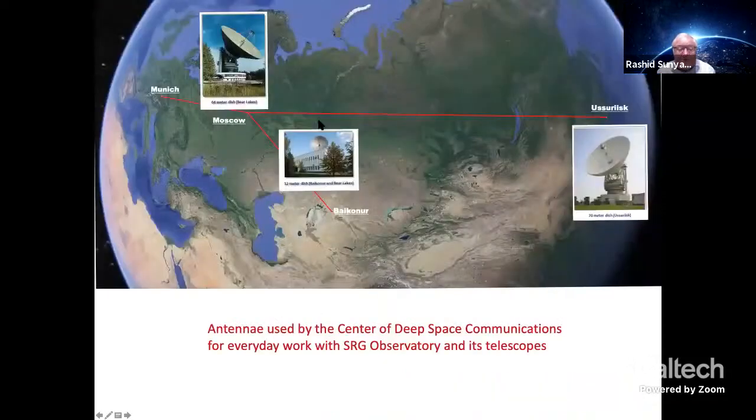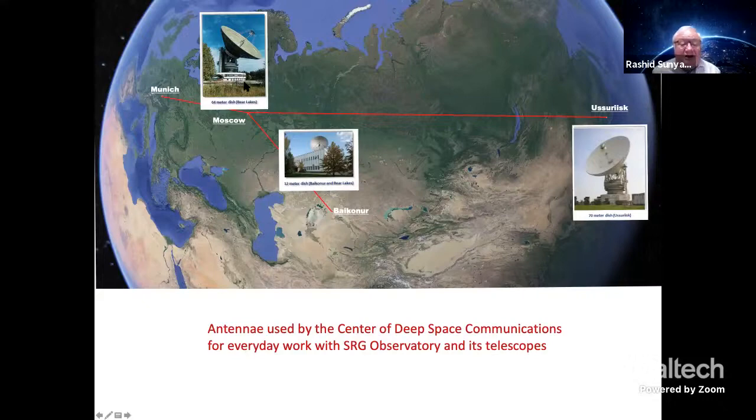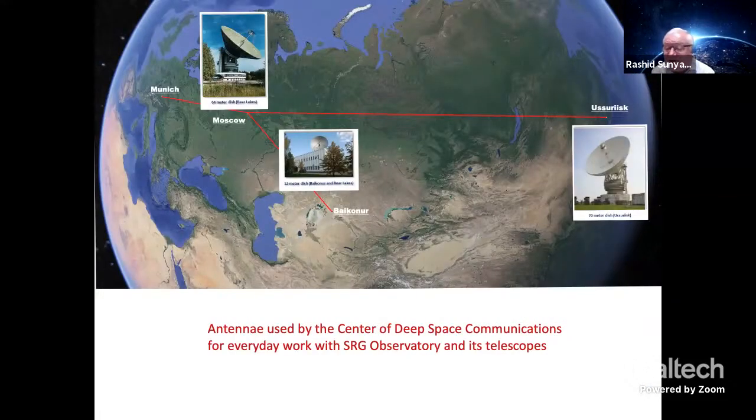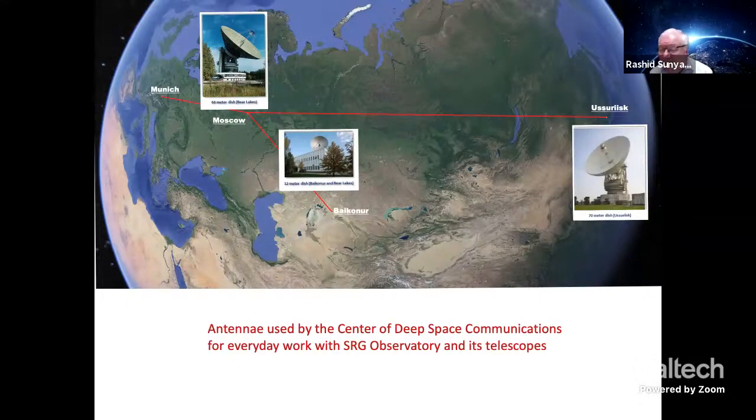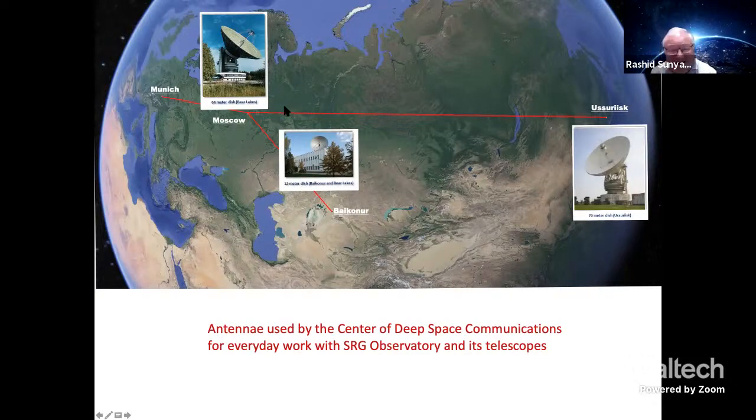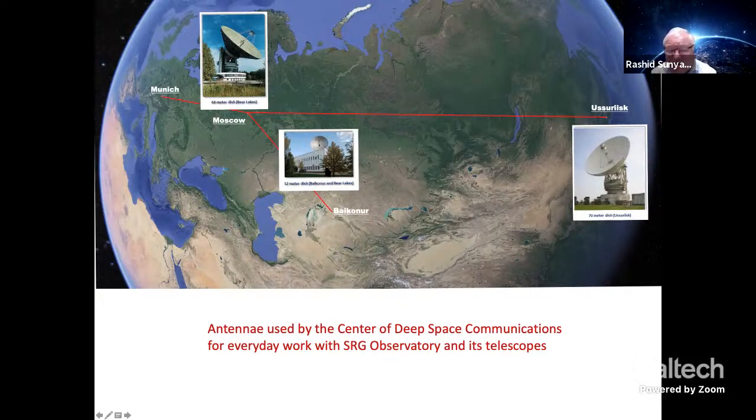Now you see every day two giant dishes. These are the biggest dishes of Russian deep space network. One in the vicinity of Moscow, Bear Lakes, 64 meter dish near Moscow. And second dish is in Ussurisk near the Pacific, very close to the border of Russia with North Korea and China. These two dishes are receiving our data. Baikonur and Bear Lakes are sending commands to the spacecraft and to ART-XC device. Baikonur is the launch site in Kazakhstan.